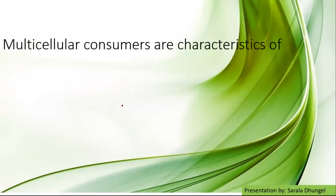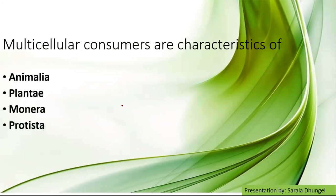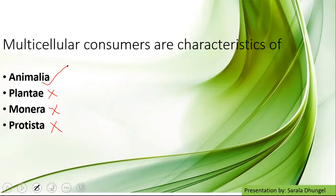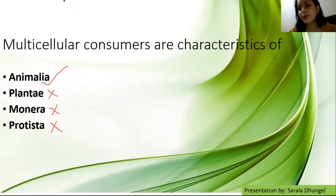Another MCQ: Multicellular consumers are characteristics features of which kingdom? The options are: (A) Animalia, (B) Plantae, (C) Monera, (D) Protista. We cannot think of Protista as they are unicellular, and the question asks for multicellular. Plantae — yes, they are multicellular, but plants are considered as producers. So the correct answer is Animalia. This is the way how, when MCQs are difficult, you sometimes need to eliminate the wrong answers to reach the correct answer. We will be studying about Protista in the next video.